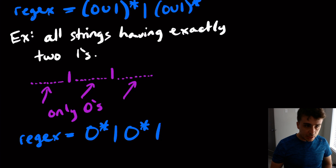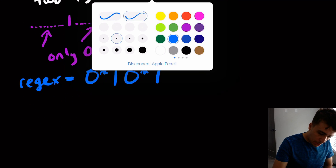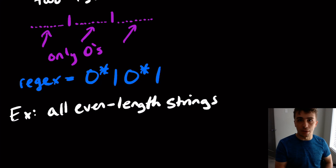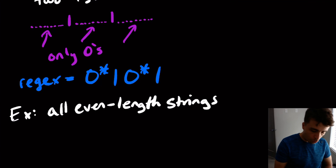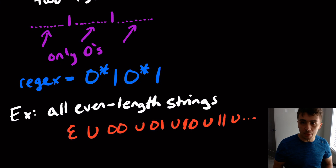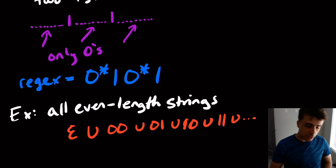Another example we've done several times on this channel: all even-length strings — so length zero, length two, length four, and so on. Something you could try, although it won't work, is to say the regex is the empty string union 00 union 01 union 10 union 11 union... and just keep going. But that's not a formal way of writing it, because this regex would be infinitely long. You have to make precise what that ellipsis really means, and even then, an infinitely long regex is not something you're allowed to write.